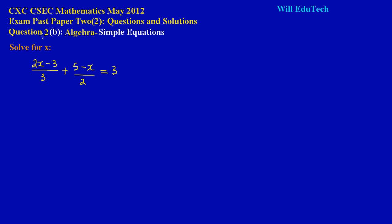In this lesson we are going to be looking at question 2b on the May 2012 CSEP math paper. Here they have given us a simple equation to solve for x. We have (2x - 3)/3 + (5 - x)/2 and that is equal to 3.